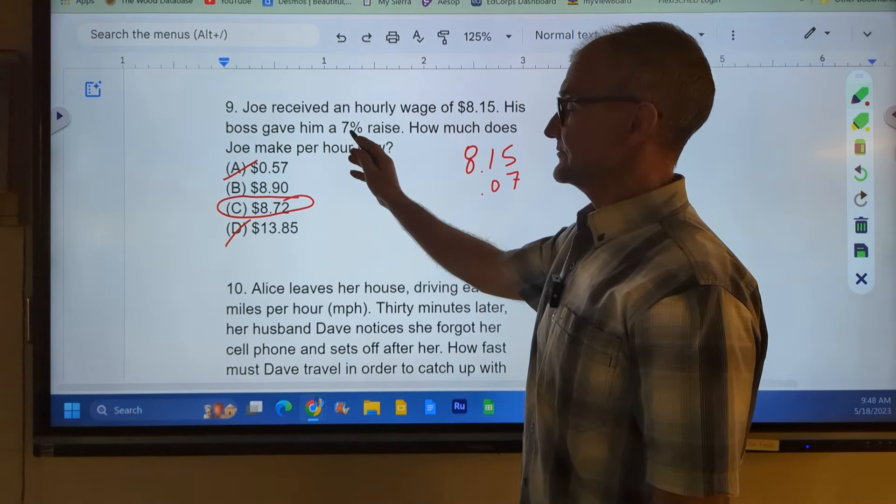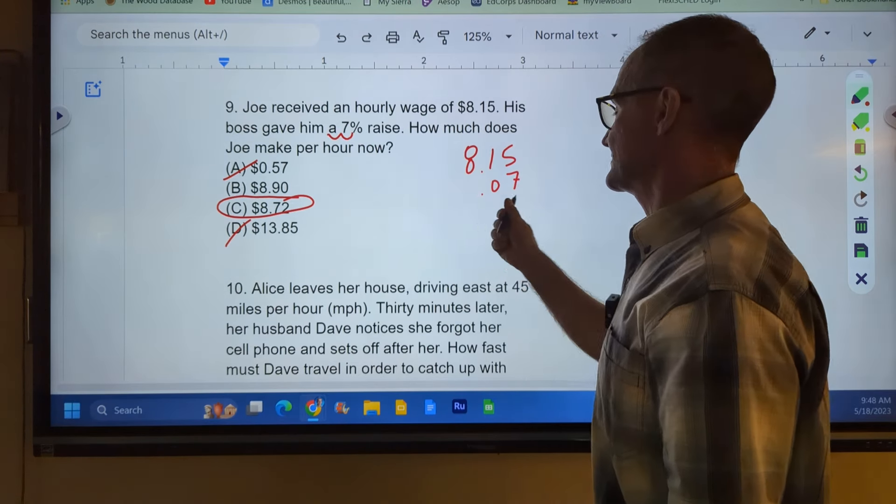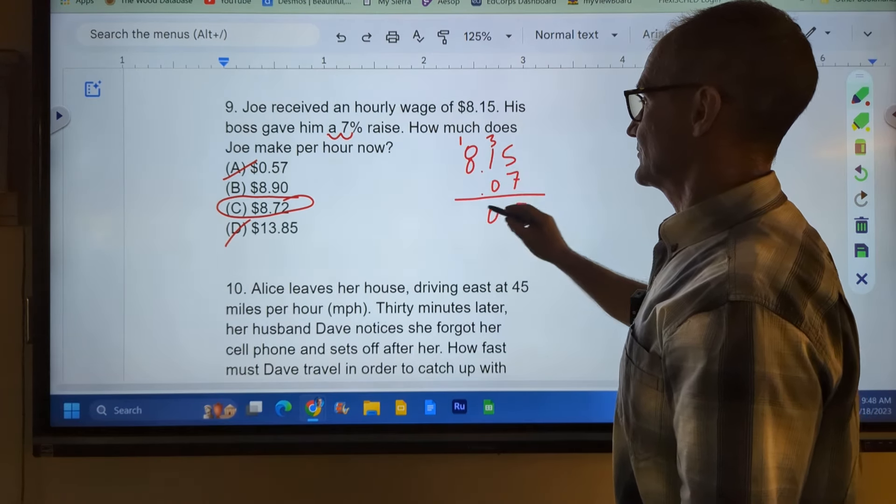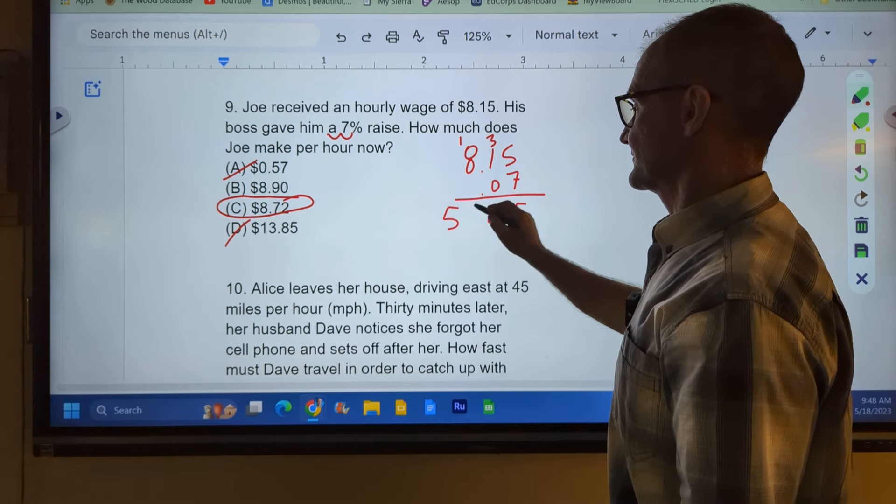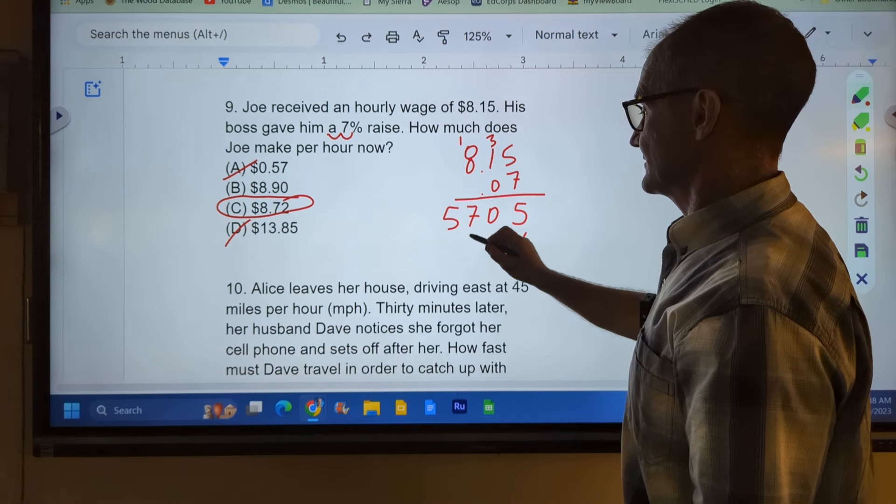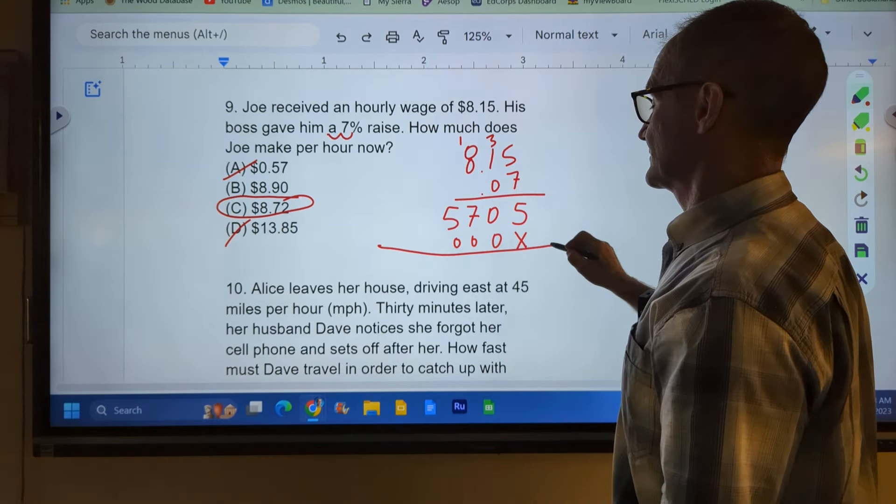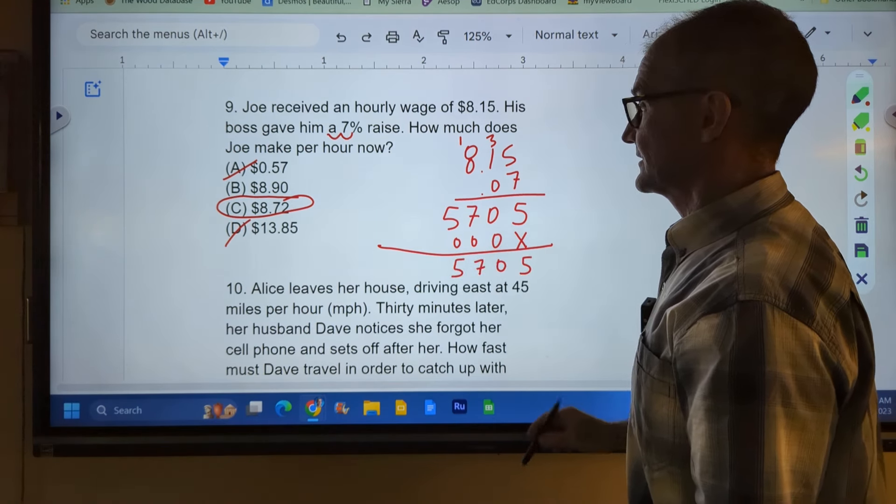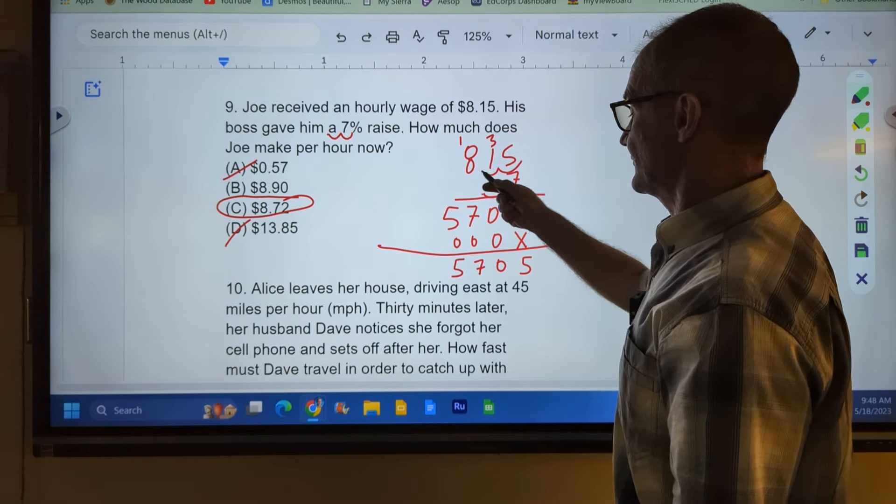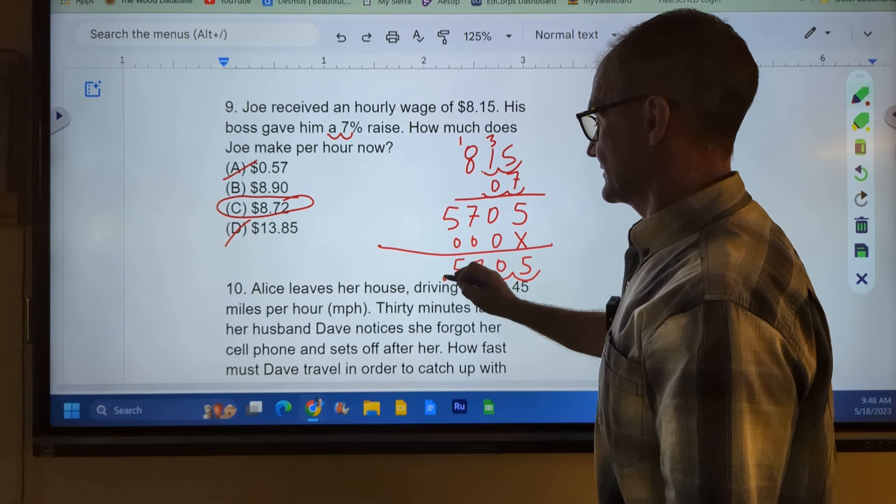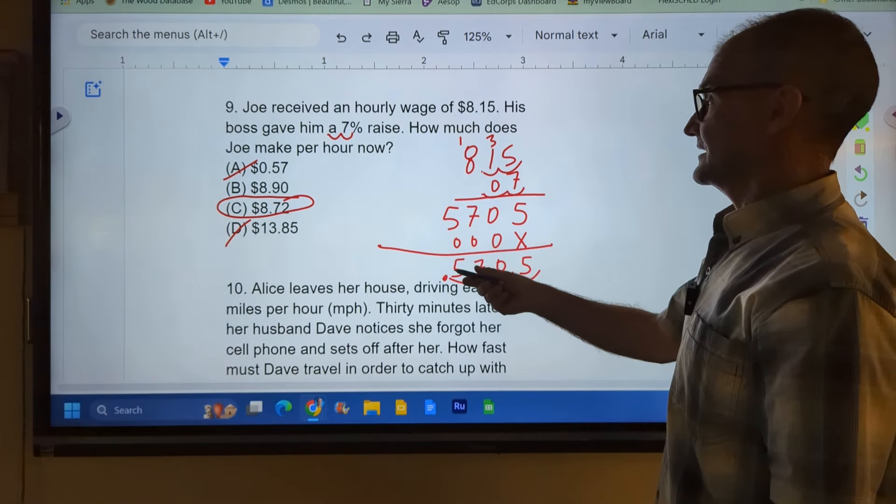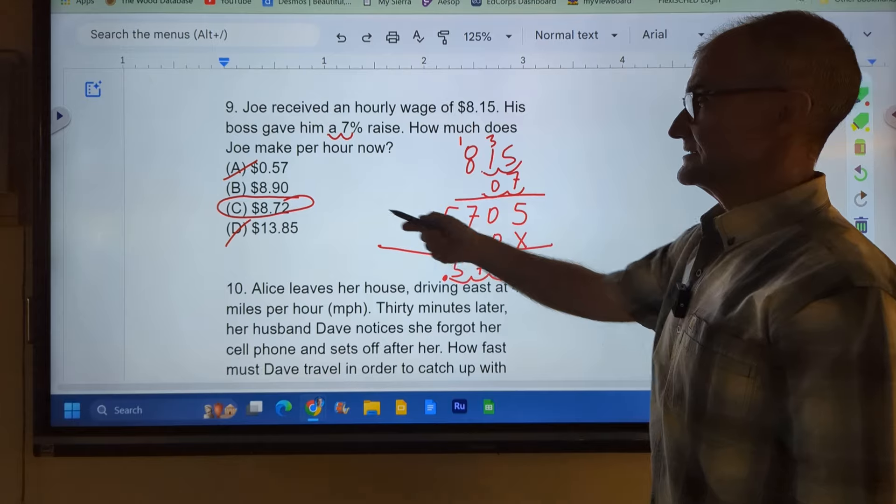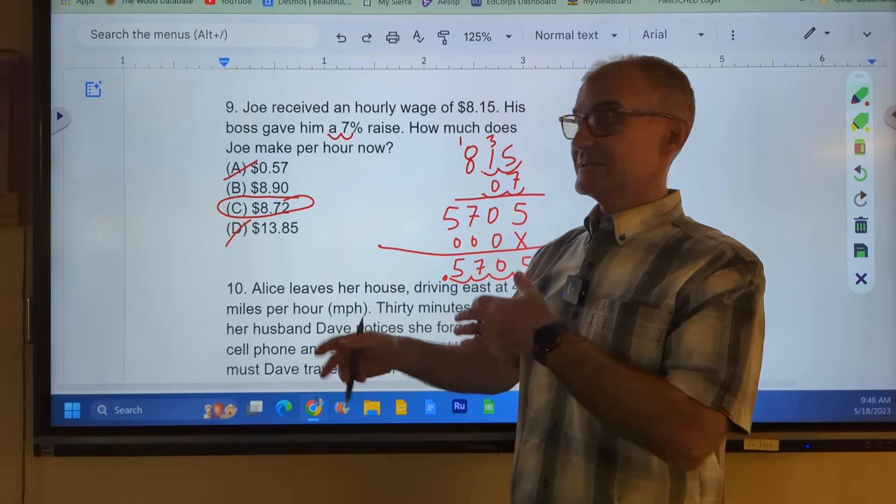Or we could multiply that out to 8.15 times 0.07, right? This is 7%, converted to decimal. Multiply this together, 35, carry the 3. 7 and 3 is 10. Carry the 1, 56, 57. Then I've got a placeholder. These are all zeros. I add together 5, 0, 7, 5. And then right here I'm over one, two, three, four. One, two, three, four. That works out to 57 cents is the profit, right? Because he goes up by 7%. So 57 and the 8.15 is $8.72. So my initial good educated guess was correct.